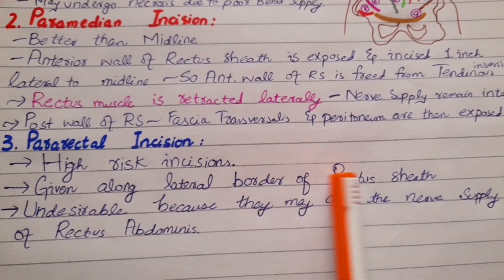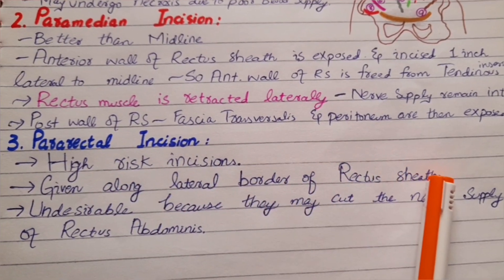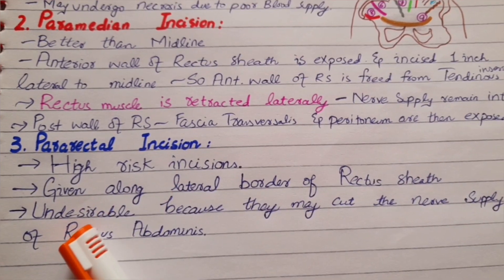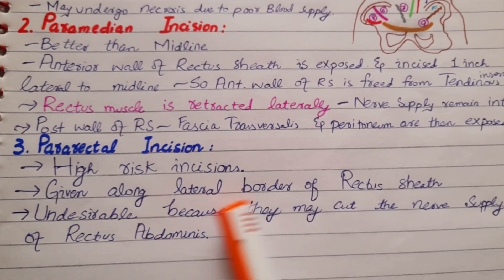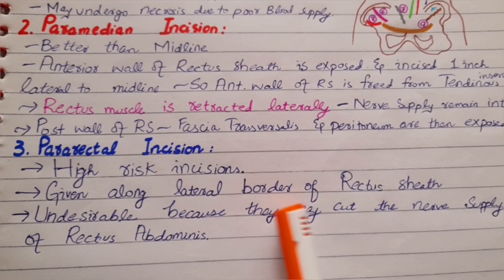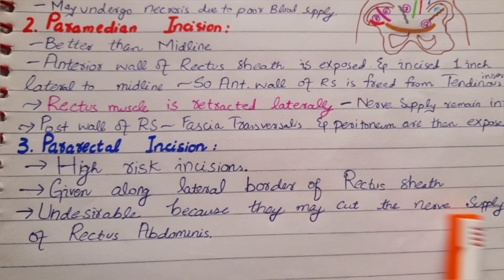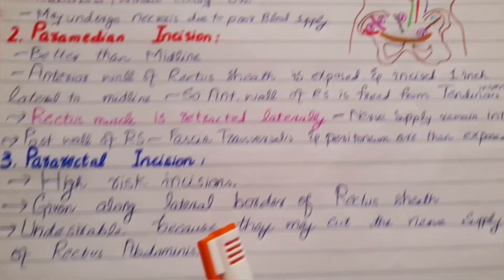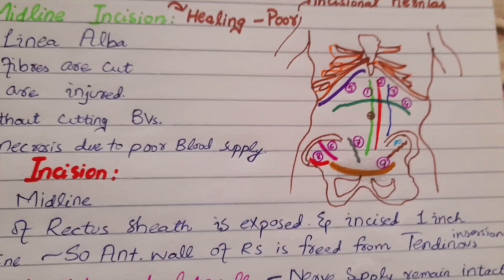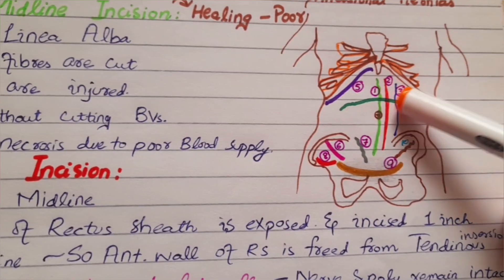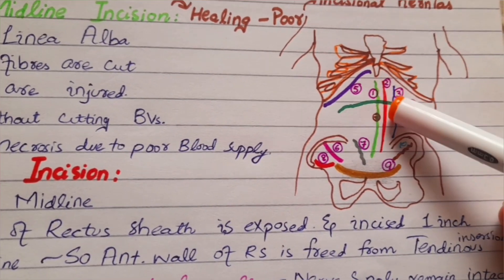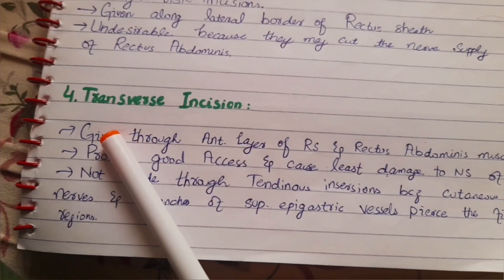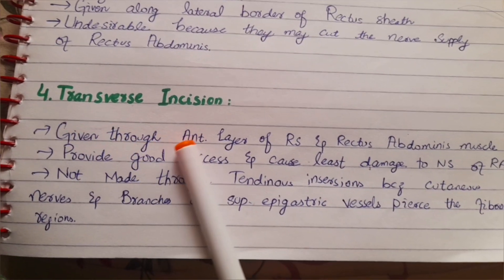Next are the pararectal incisions. These are high-risk incisions given along the lateral border of the rectus sheath. They are undesirable because they may cut the nerve supply of the rectus abdominis muscle. The incision marked in blue represents the pararectal incisions.